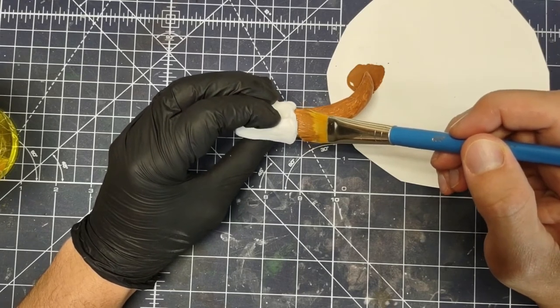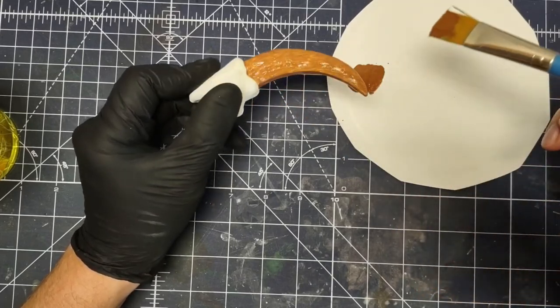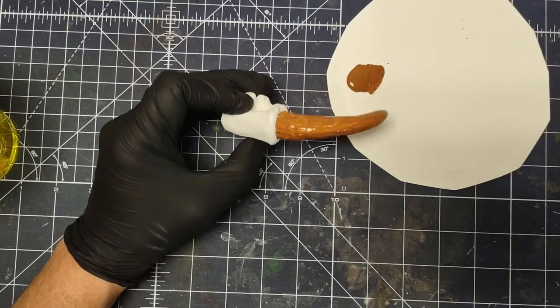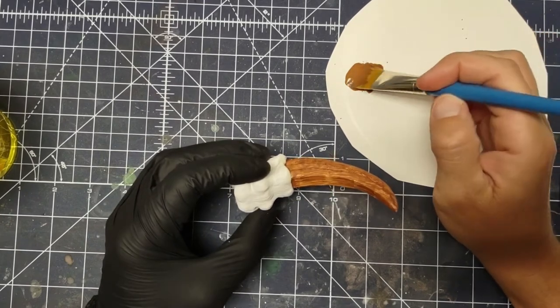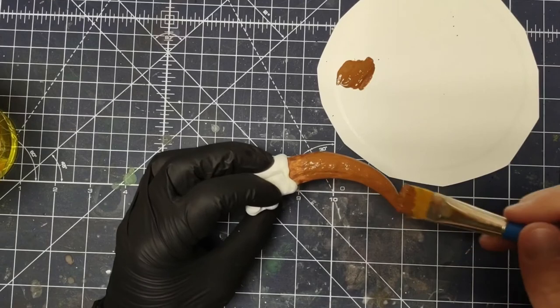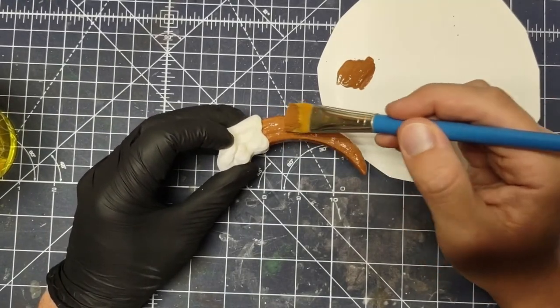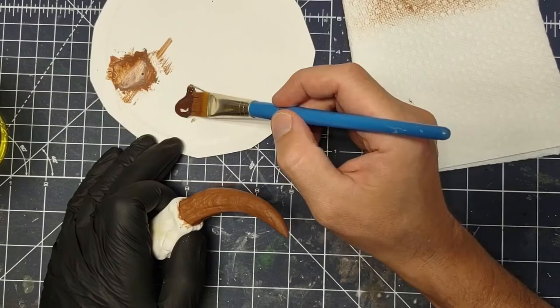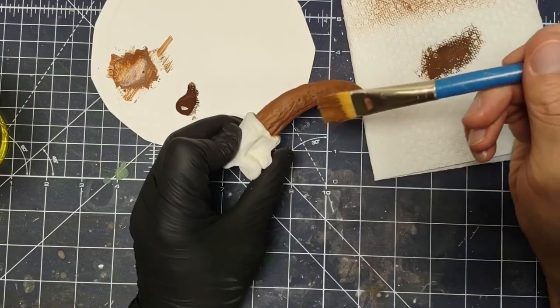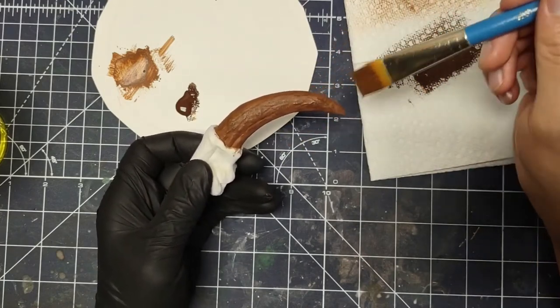One notable thing is that I decided to base paint the claw in a lighter brown color, and then dry brush it with darker colors. Which is the opposite of how dry brushing is usually done, unless you're painting like a fire or a glow effect, but that's a whole other topic of its own. Anyways, back to the claw.